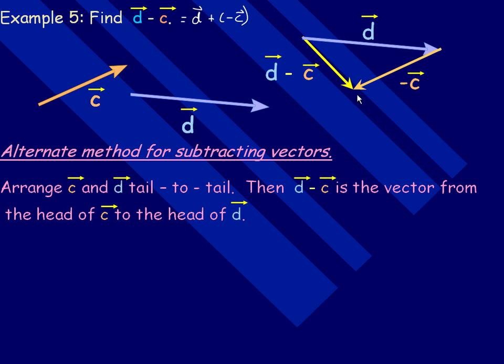So that's the D minus C vector. Subtract vectors by adding the opposite. Now an alternate method for subtracting vectors is to arrange the two vectors tail to tail. So if I take my same two C and D vectors, there's the C and D drawn tail to tail, both tails are right here. Then the D minus C vector is the vector that goes from the head of C to the head of D. So there's the D minus C vector.